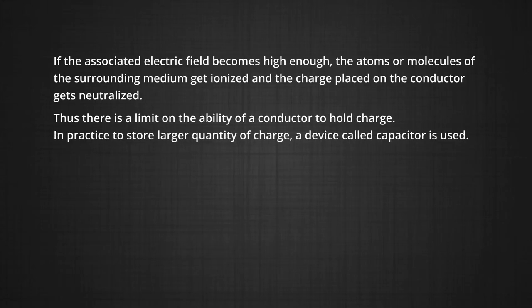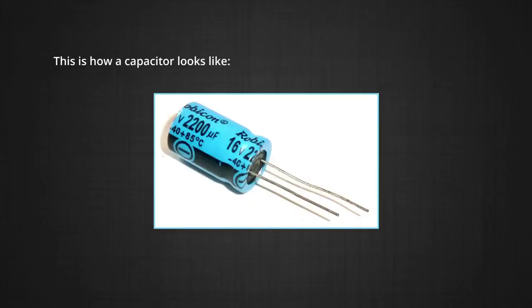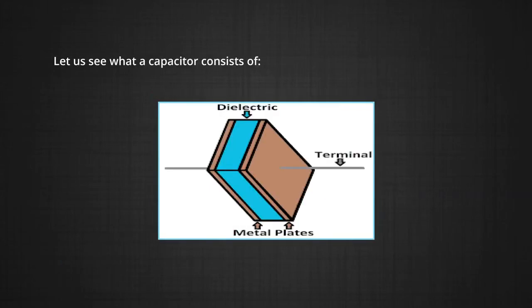In practice, to store larger quantity of charge, a device called capacitor is used. This is how a capacitor looks like, as also shown in the figure. It consists of two metallic plates, and these two plates are separated by a non-conducting medium, that is, a dielectric.